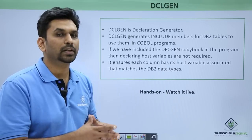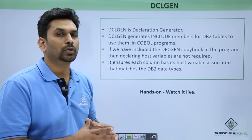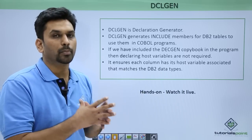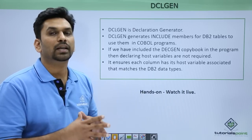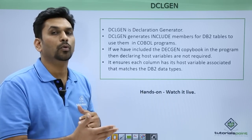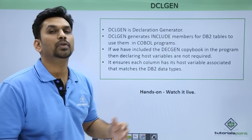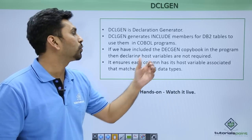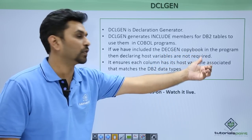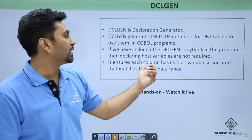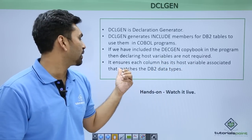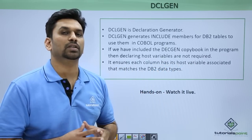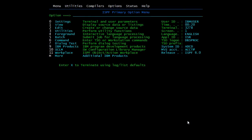Declgen is known as the Declaration Generator. If you have a table and want to use it inside a COBOL program, you can go to the Declgen option in the mainframe and declare and generate a copybook of that table. That copybook can be used in the program — no need to manually specify host variables. It ensures that each column has a host variable associated with it that matches the DB2 data types.